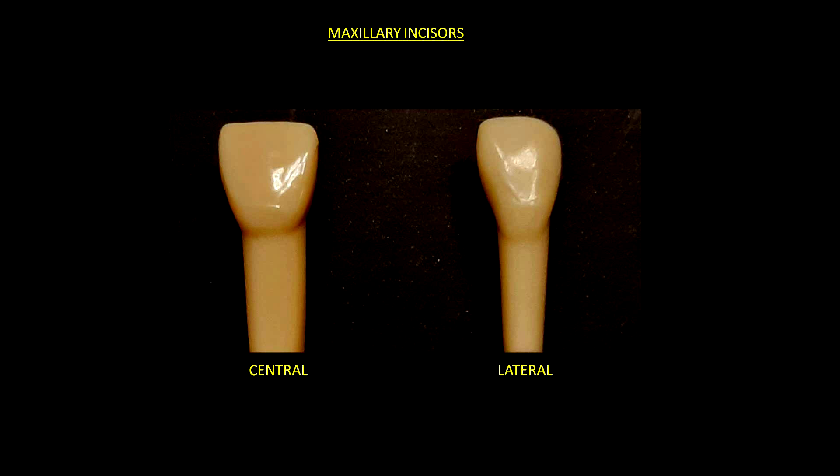They look about the same, but the central is much wider in the mesiodistal direction. So if we place a red line over the central maxillary incisor and we translate this line to the lateral, we can see that it is much wider.